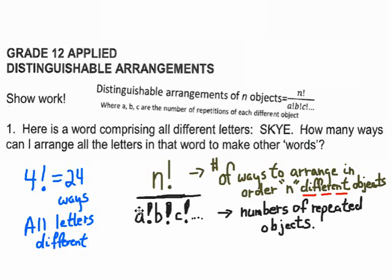You could divide it by one factorial because there's one S, and one factorial because there's one Y, and one factorial because there's one K — but one times one times one at the bottom, you wouldn't bother doing that.